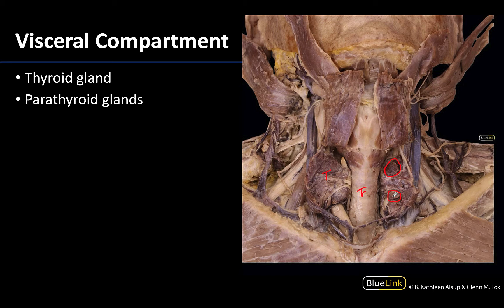There are typically four parathyroid glands. There's usually a superior pair — there would be a superior one over here to match this one — and then an inferior pair, if we were looking at the posterior side of the thyroid gland right here. The superior pair is typically the most constant in size and placement, while the inferior pair is the one that could be found in different locations.